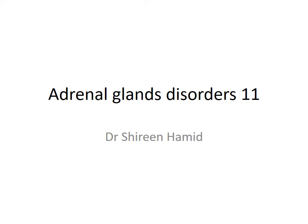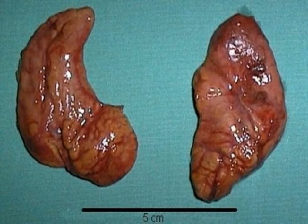We are going to discuss adrenal gland disorders. Adrenal glands are two in number and are located anterior to the upper poles of the kidney. The gland is pyramidal in shape on the right side, and the left adrenal gland is more concentric in shape, possibly due to the liver compressing the adrenal gland on the right side.